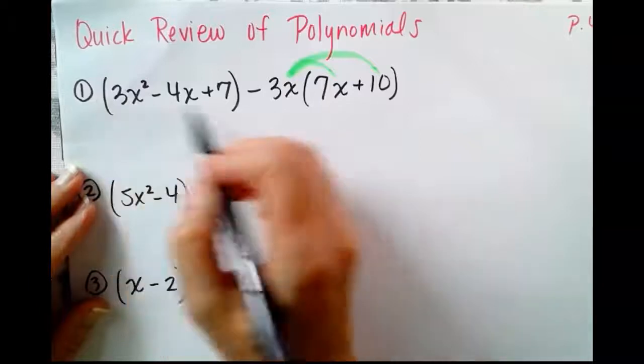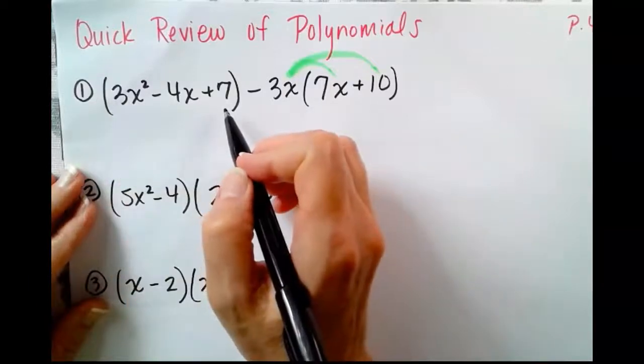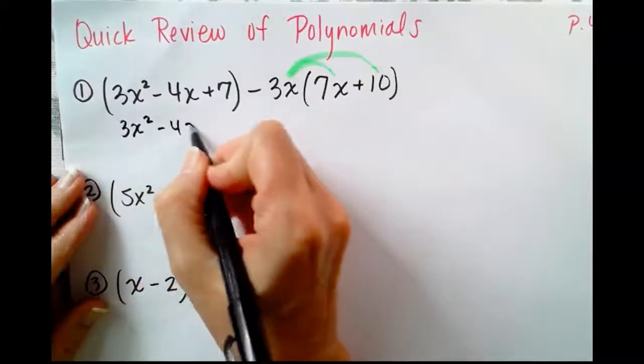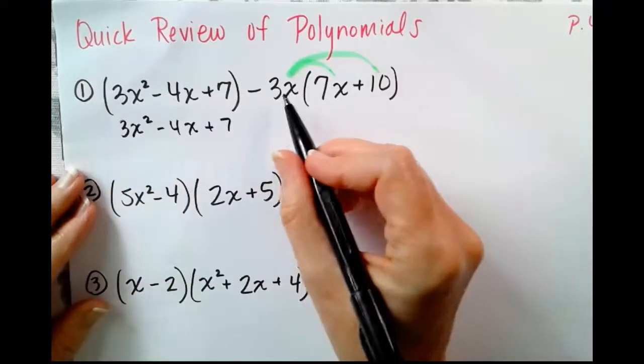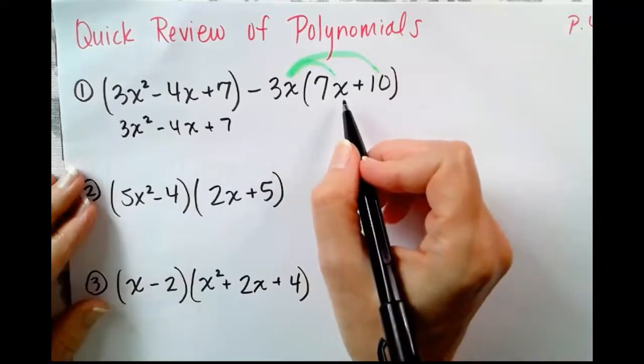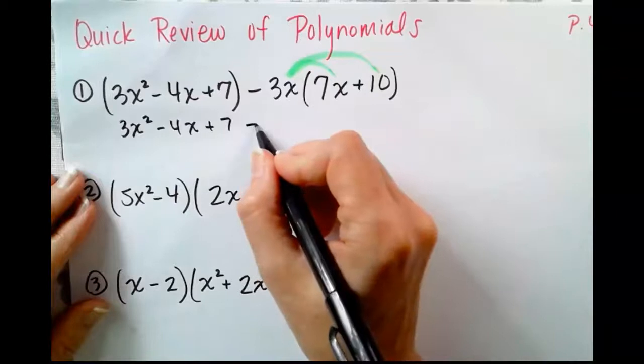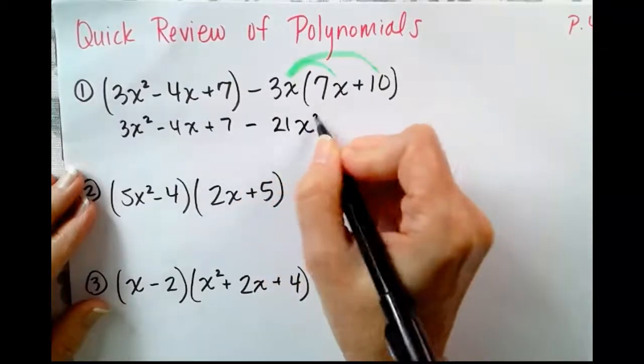This first trinomial is in parentheses, but the parentheses really don't have much meaning, so I'm going to lose them. But I am going to distribute 3x times 7x plus 10, negative 3x times 7x, negative 21x squared.